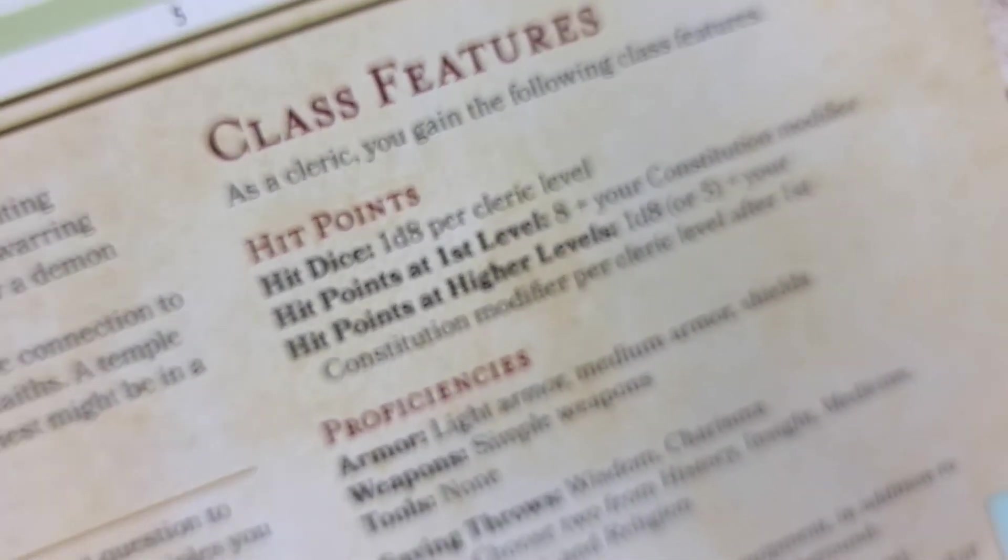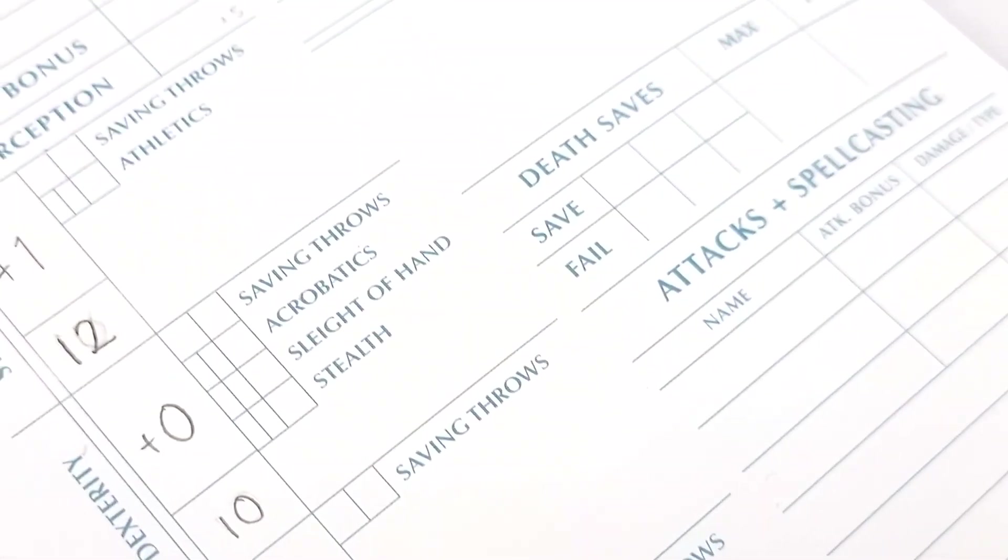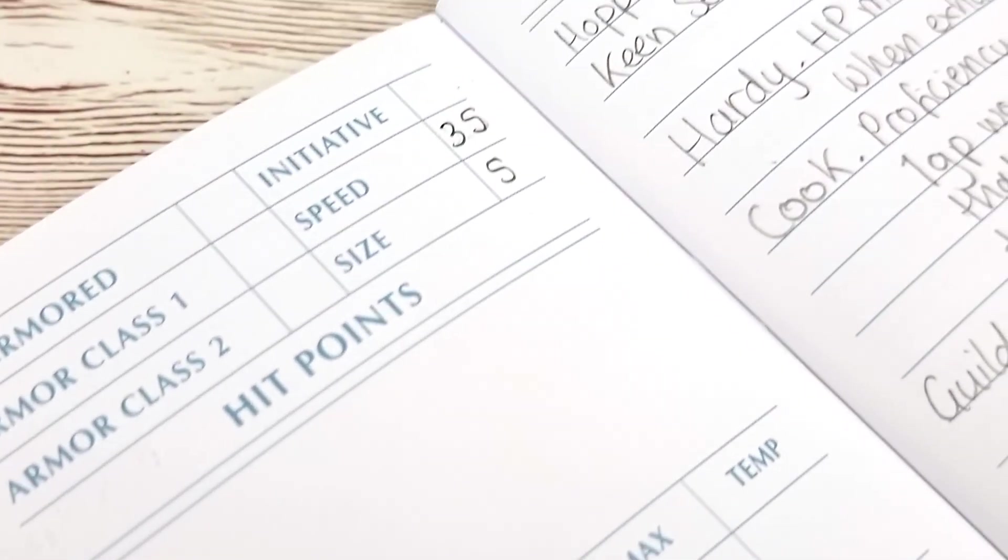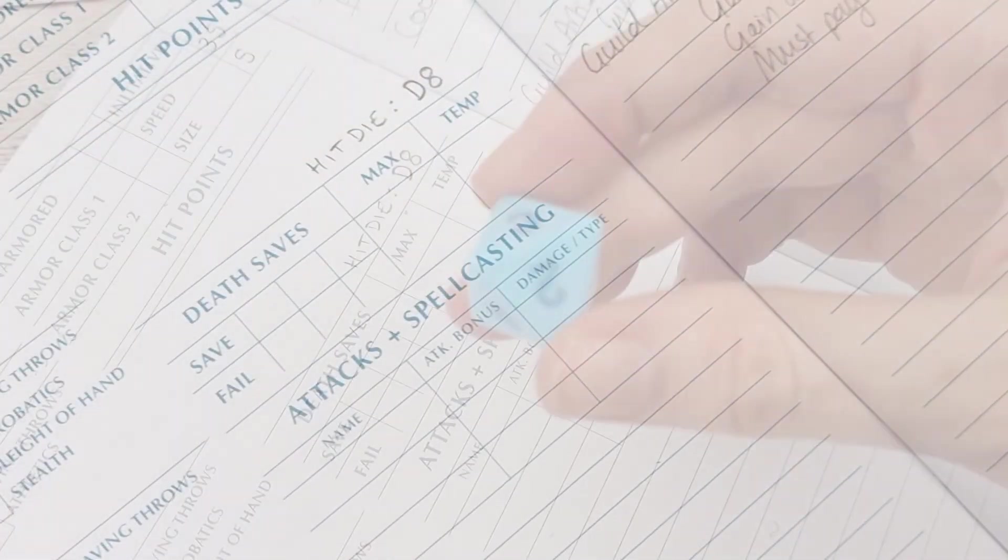Now to note down your class features. You'll find everything you need in the information provided for your chosen class. We start with the hit dice. When you take a short rest you can choose to heal up using hit dice. Your class feature should tell you which die you'll need to use here. Mine is a d8.